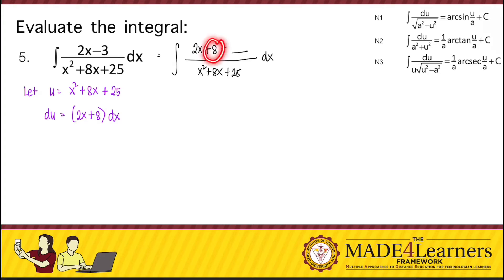Now what do we add to 8 so that the resulting number would be negative 3? 8 minus 11 is equal to negative 3.